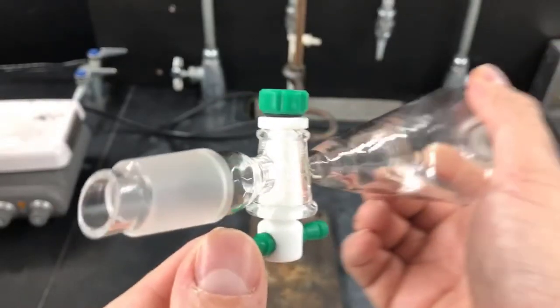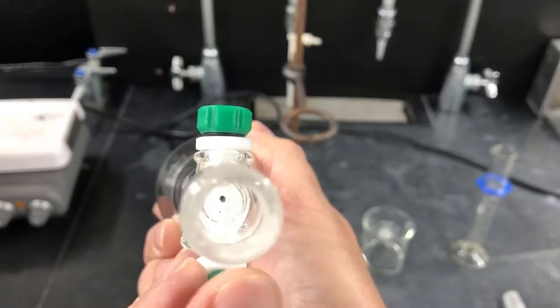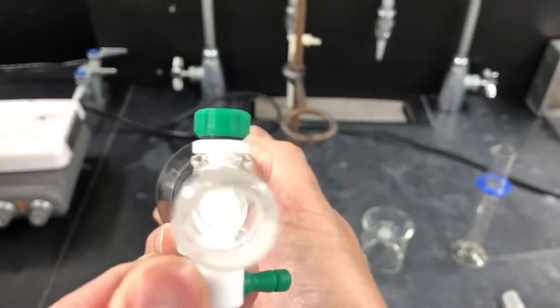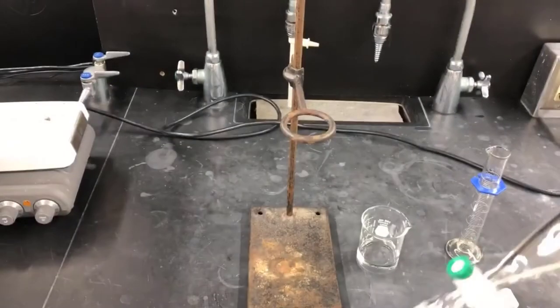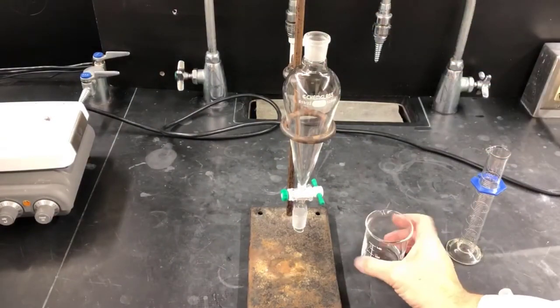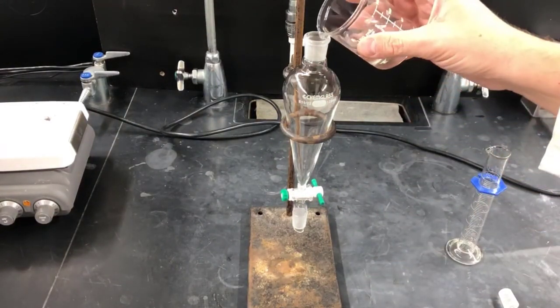Here's a close-up look down the separatory funnel so you can see the valve in action. Here it is open, and here it is closed. Now I'm putting the separatory funnel back in its ringstand support, and I'll pour in the ethyl acetate solution of aspirin and caffeine.